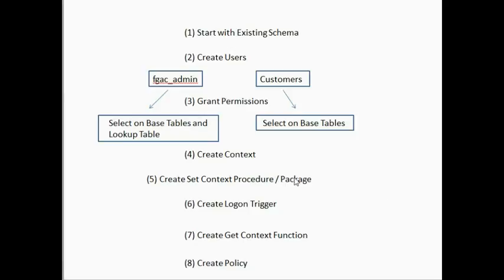Presumably there's also a login trigger for these particular users that are logging in. We're going to start with an existing schema that has customer orders. These customers — we're going to have to create those users, and they need a policy that filters out all rows relevant only to them. They're going to have select on the base tables and permissions, but the policy is going to restrict the rows just to them.